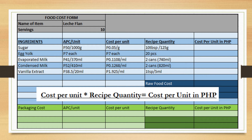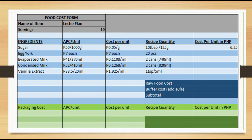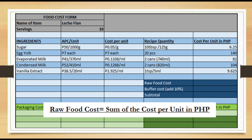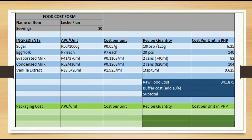Next, doon tayo sa cost per unit in peso. The formula is cost per unit times recipe quantity. So for sugar: 0.05 times 125 = 6.25. For egg yolk: 7 pesos each times 20 = 140. And same with the other 3 ingredients. For the raw food cost, the formula is the sum of all cost per unit in peso — titotal mo lahat dun sa cost per unit in peso. The answer is 341.875.